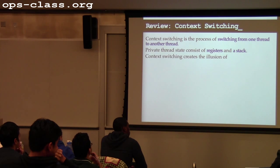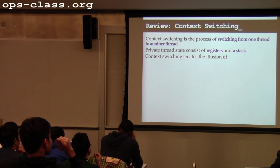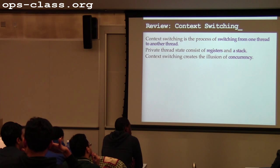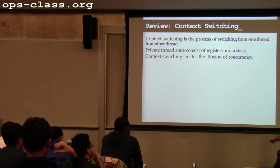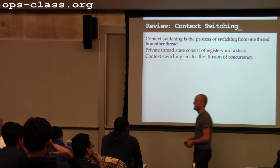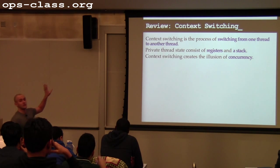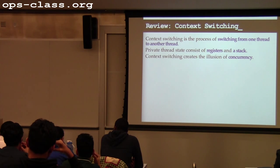So why do we switch between threads? What's the goal? Parallelism, or — my favorite word — concurrency. We're trying to create the illusion of concurrency, to make the machine look like it's doing more things at once than it can physically be doing. On a uniprocessor machine it can't do more than one thing; on a multicore machine I'm limited by the number of cores. But if the operating system does this well, it can make the machine look like it's doing many things at once.